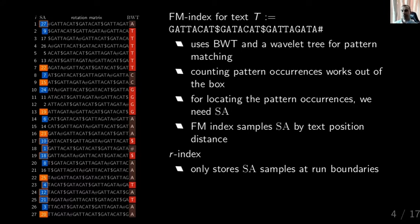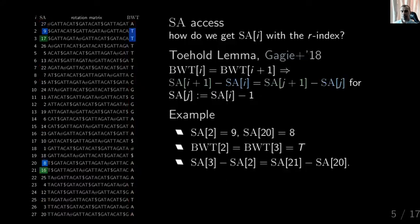If you just store these suffix array samples, how can you get access to the suffix array? One crucial key is the so-called toehold lemma. It tells you: if at position i and the next position you have the same letter in the BWT, then if you're at suffix array entry 9 and go to the entry 8, you can see that the difference of values 9 and 17, and 8 and 16, is the same — it's just 8. Whenever you have the same subsequent values in the BWT, this key observation holds.